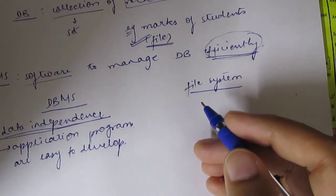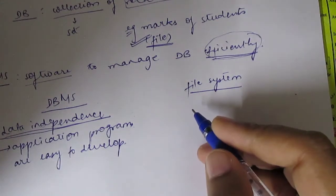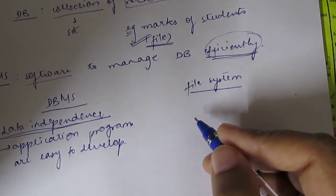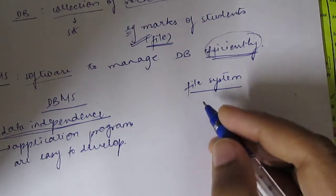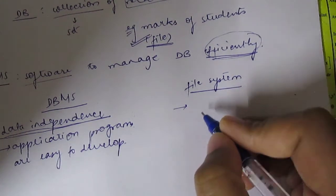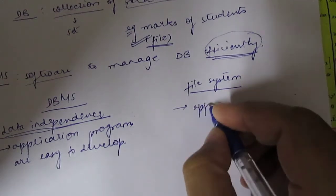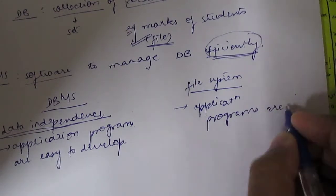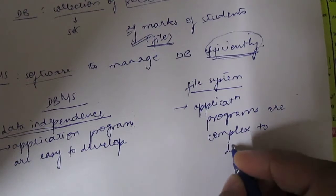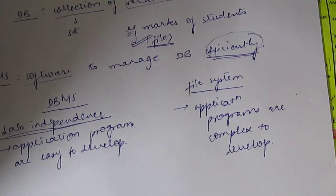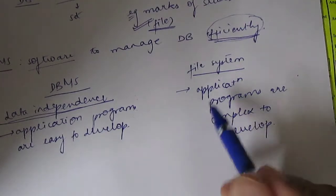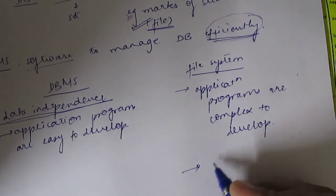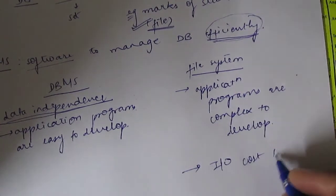In the file system, the user has defined everything — the file, security of the file, access methods — the user has to handle all of it. So application programs are complex to develop. All users have to handle everything; there is no data independence. As a result, I/O cost will be more in the file system, whereas in DBMS, I/O cost will be less.